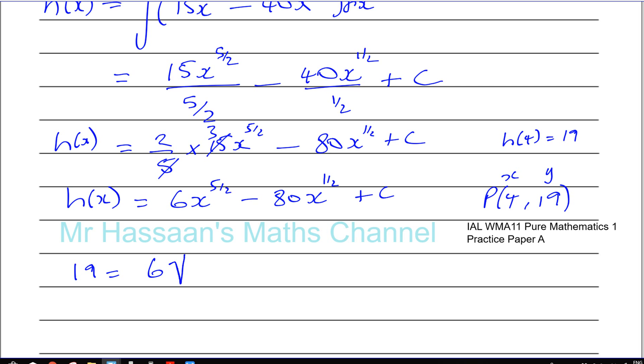Okay, x to the power of 5 over 2, sorry, the square root of 4 to the power of 5. That's what that means. The square root of 4 to the power of 5, because the top is the power and the bottom is the root in the index, in the power.